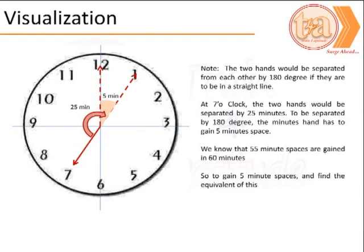We can visualize the problem as shown. The dotted line is the minute hand and the thick line is the hour hand. At 7 o'clock, the minute hand is separated from the hour hand by 25 minutes. For them to be in a straight line, the angle between them must be 180 degrees, which means the minute hand has to cover another 5 minute spaces.